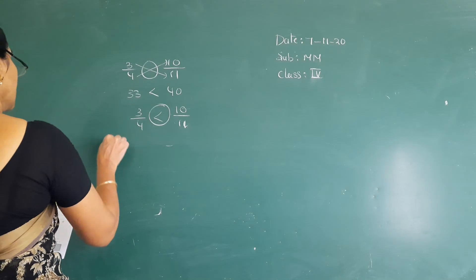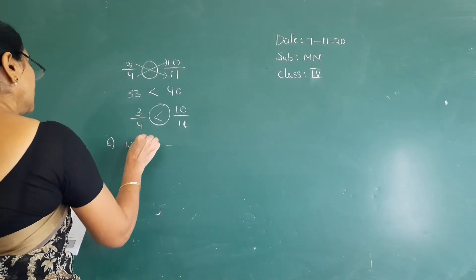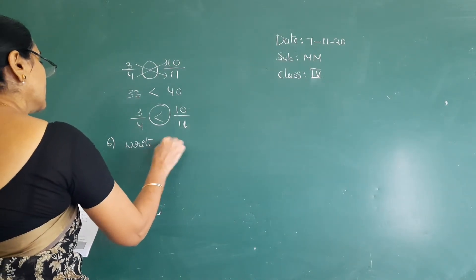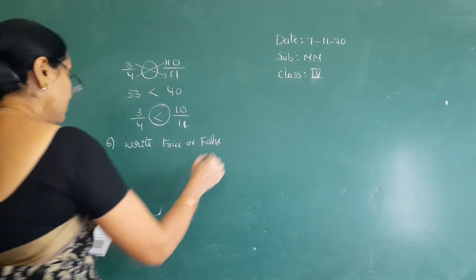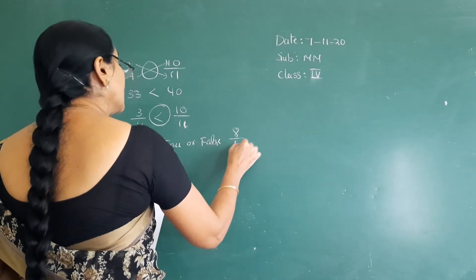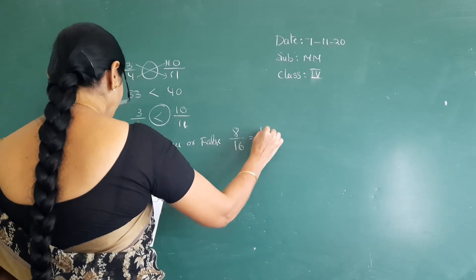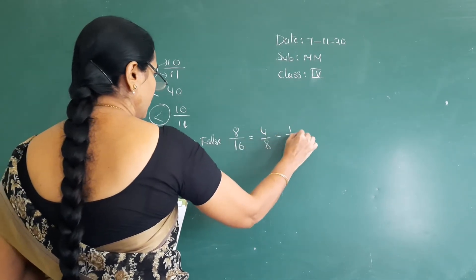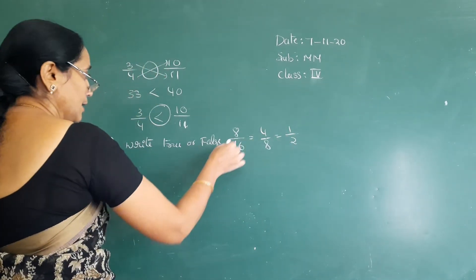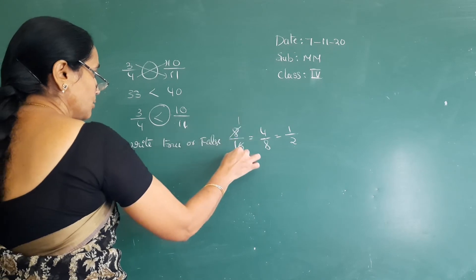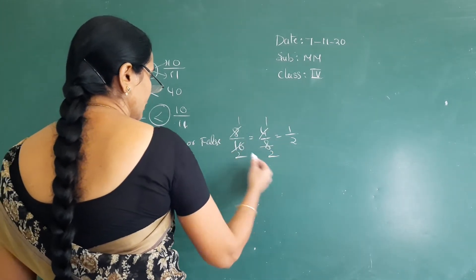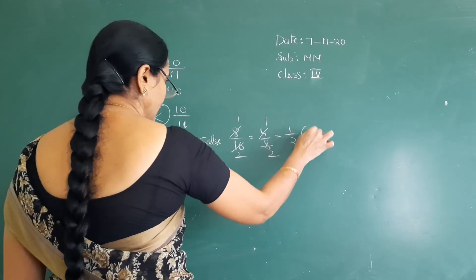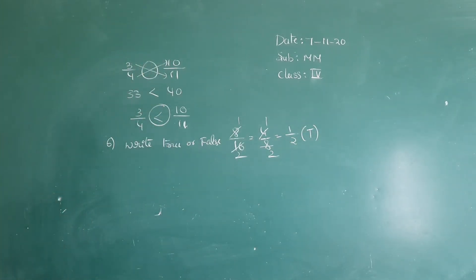Write the fractions in their simplest form. See: 8 by 16 equals 4 by 8, equals 1 by 2. Here 8 fours are 8, 8 fours are 16, 4 fours are 4, 4 fours are 8. So all are equal to 1 by 2. These are the correct simplest forms.